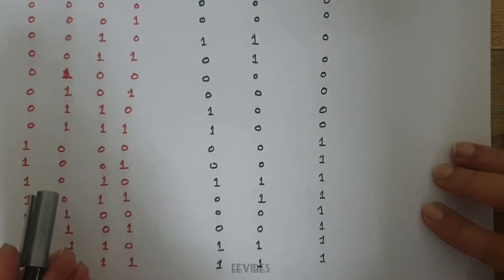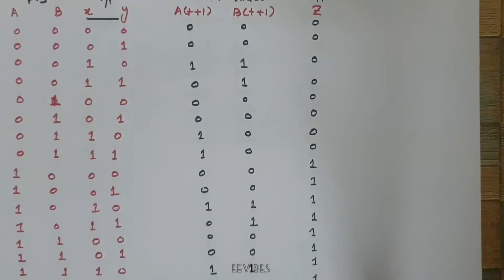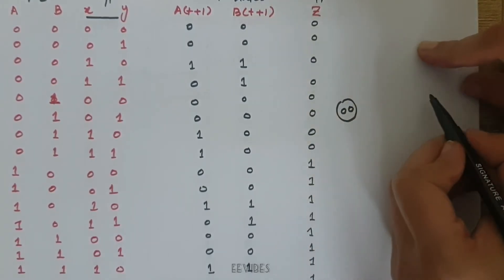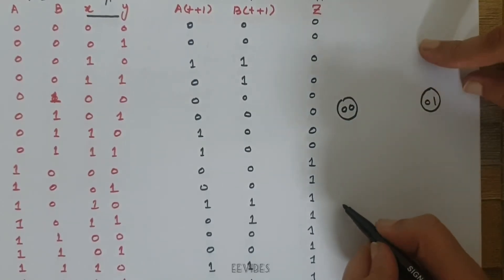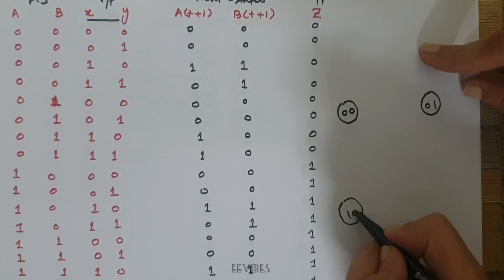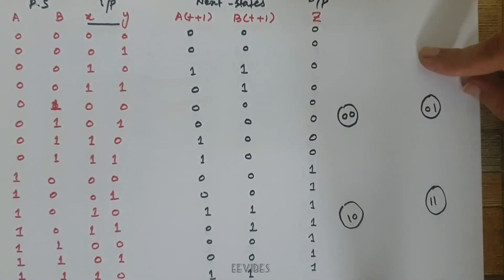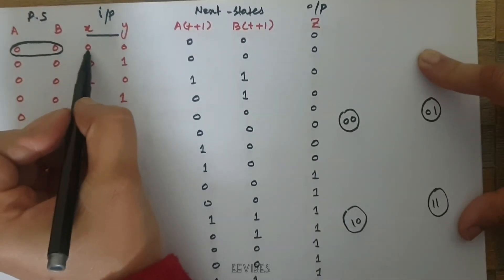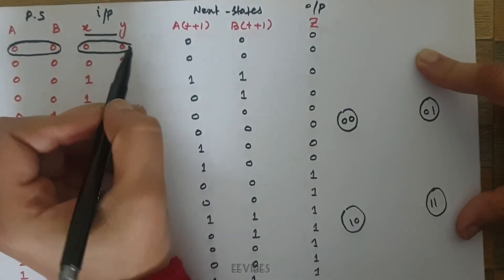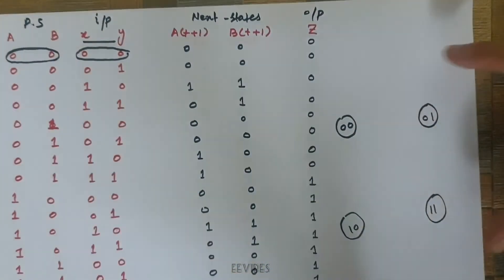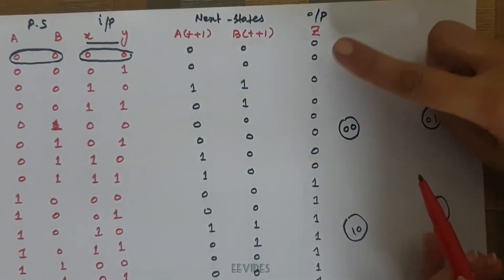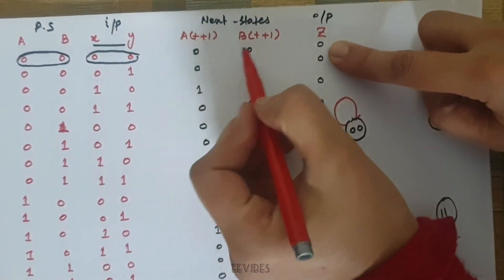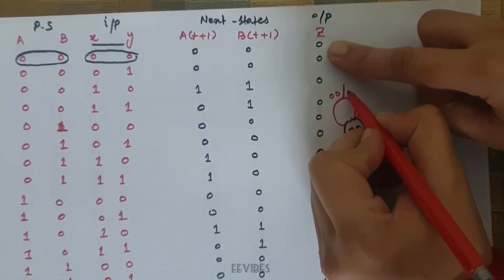Once you have the state table, it is very easy to draw the state diagram from it. Since there are two flip-flops, there are four possible states: 00, 01, 10, and 11. Starting with present state 00 — when input is X=0, Y=0, we move to next state 00 again with output 0, so it returns to itself. When in state 00 with input 0,1 it again loops back to 00 with output 0.